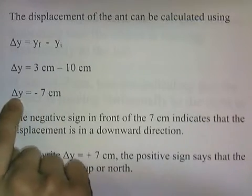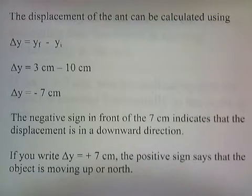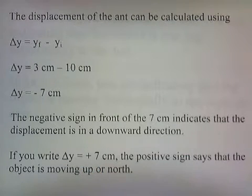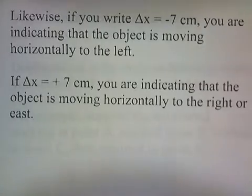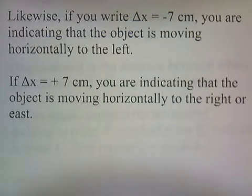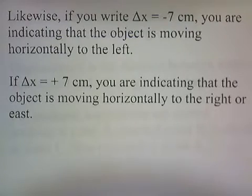Triangle is also the Greek letter delta. Delta y is negative 7cm. The negative sign indicates that the displacement is in a downward direction. If you write delta y equals positive 7cm, the positive sign says the object is moving up or north. Likewise, if delta x equals negative 7cm, the object is moving horizontally to the left. If delta x is positive 7cm, the object is moving horizontally to the right or eastward.